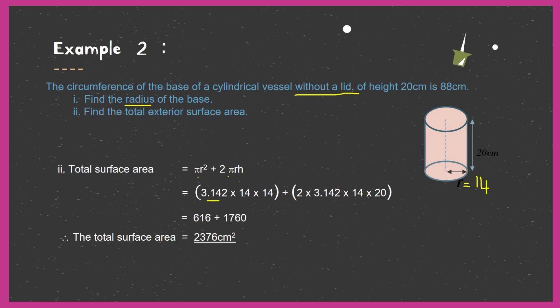I hope this was very clear. They might give you questions in different forms — like asking you to find the height given the radius and total surface area, or giving you the circumference and asking you to find the area. Questions can be twisted and given in many other ways, so you have to know the basics and know how to work it out so you can handle any type of question.